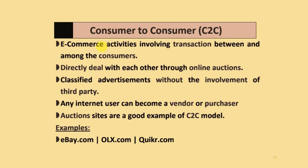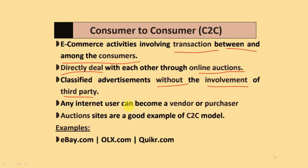Consumer to Consumer (C2C): e-commerce activities involve transactions between and among customers and consumers. They deal directly with each other through online auctions and classified advertisements without involving a third party. Any internet user can become a vendor or purchaser. Auction sites are good examples of C2C models. Examples include eBay.com, OLX.com, and Quikr.com.